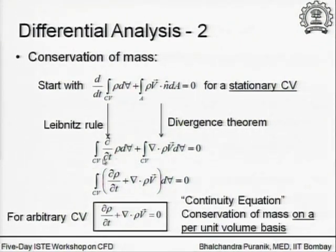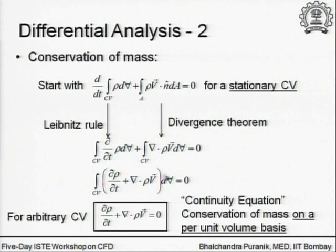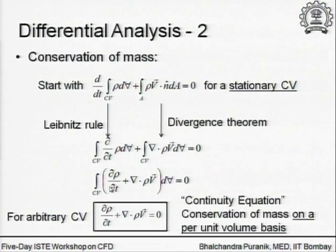These are the two rules we will use all the time when we want to convert these integral expressions to differential expressions. Now both integrals are volume integrals over the control volume, so we can combine those. If we combine those, that partial derivative is really operating only on the density, plus the divergence of rho v, the whole thing integrated over the control volume must be equal to zero. The only way this is possible for any arbitrary control volume is that whatever we are integrating must identically be equal to zero, otherwise this equality will not hold for any arbitrary control volume.